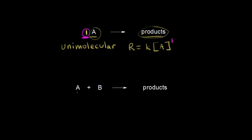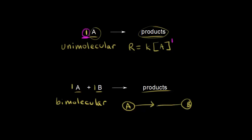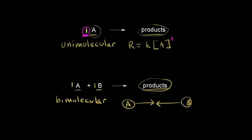Let's look at another reaction: one molecule of A plus one molecule of B gives us our products. Here we have two participating molecules, so this is a bimolecular reaction. We can think about these two molecules colliding in space — molecule A collides with molecule B to give us our products. The rate of formation of our products depends on how frequently A and B collide, which depends on the concentration of A and B. If you increase the concentration of A and B, you increase the frequency of collisions and therefore increase the overall rate.